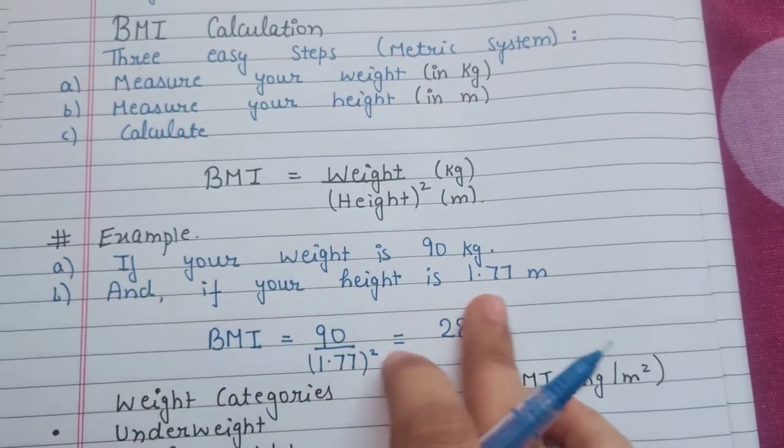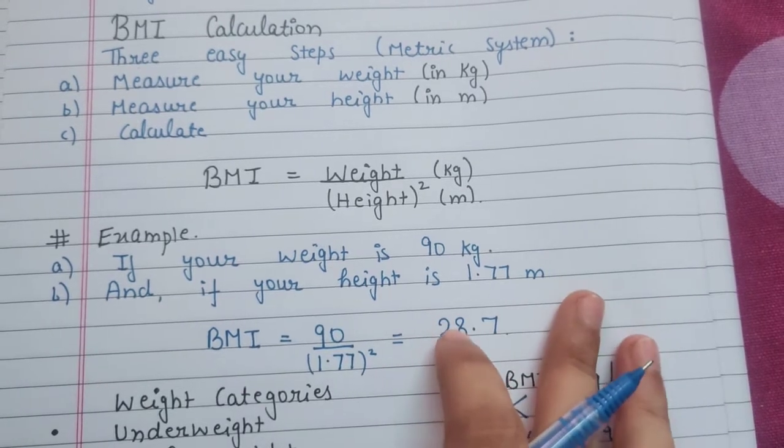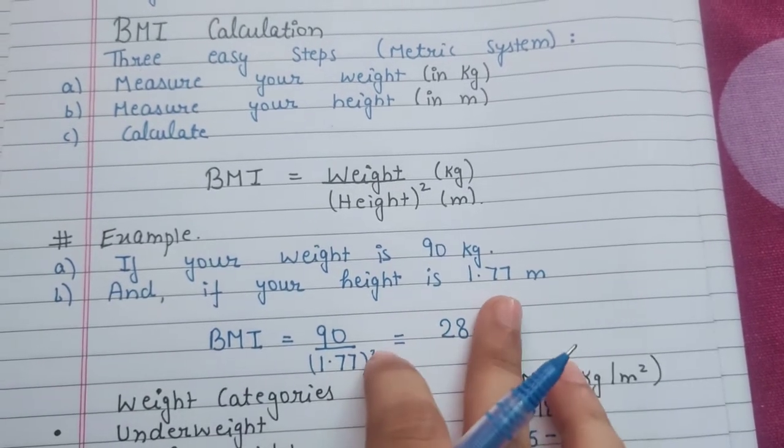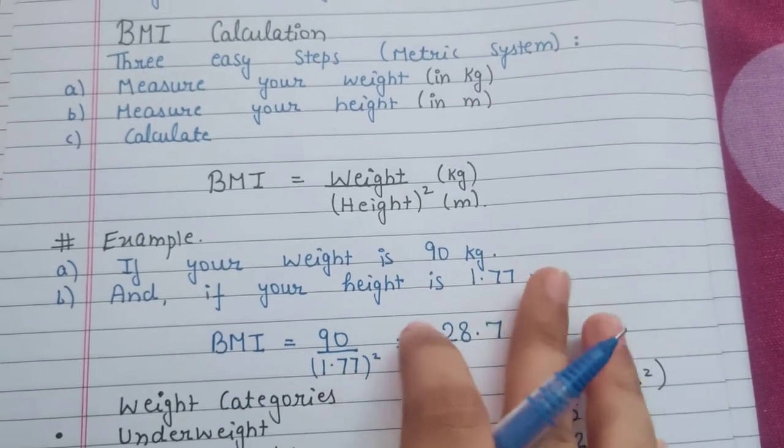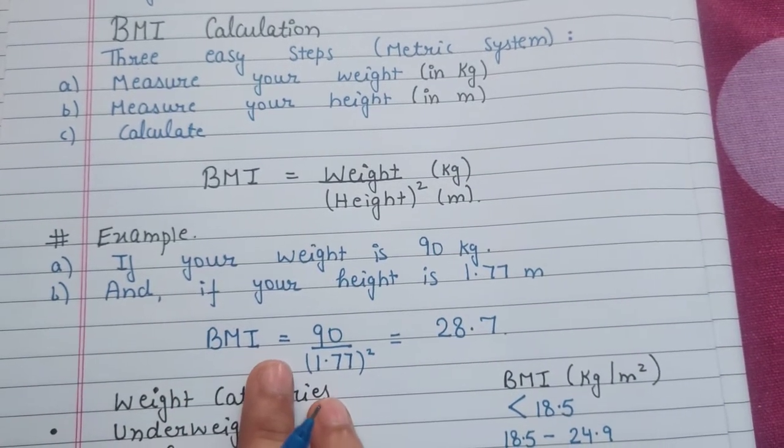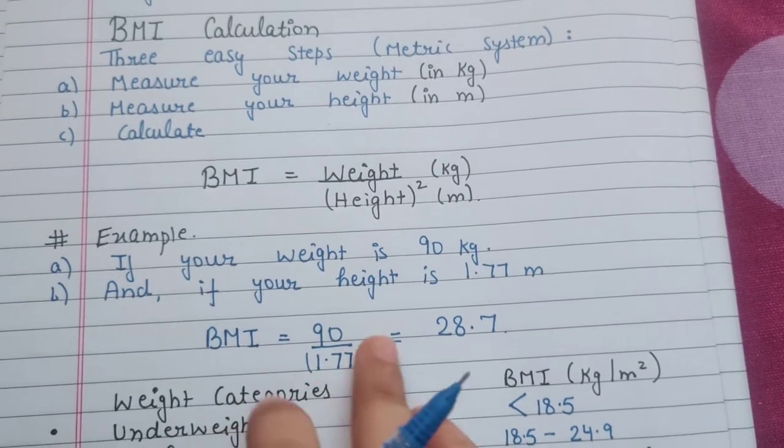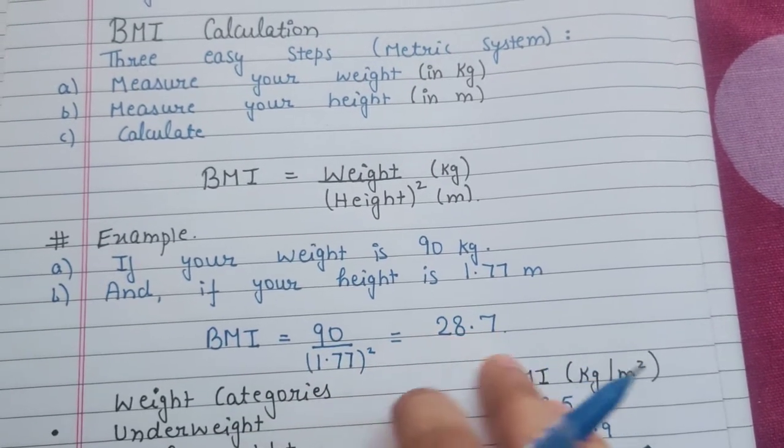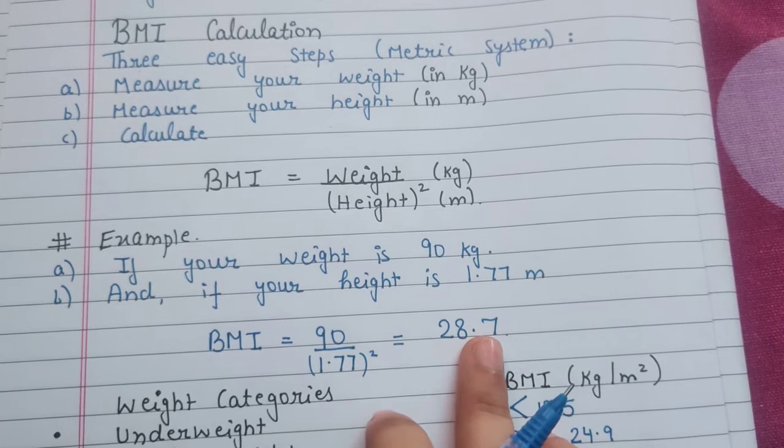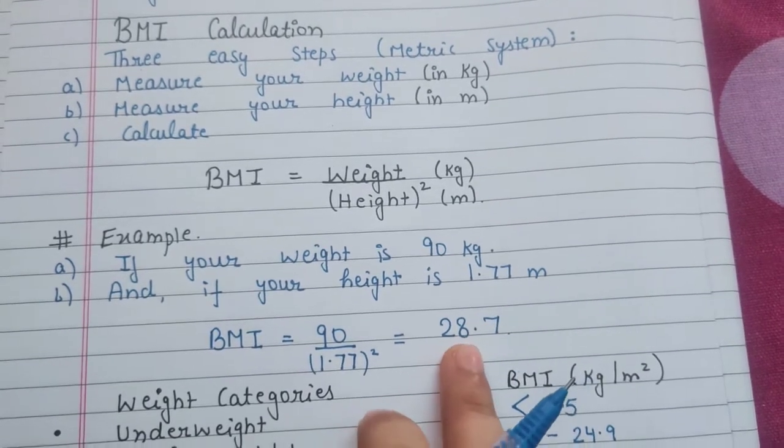Now BMI is equal to weight upon height square. Weight is 90 and height is 1.77 whole square. The answer will be 28.7. Now you need to know how to interpret this number - whether it's thin, thick, medium, or severely obese.